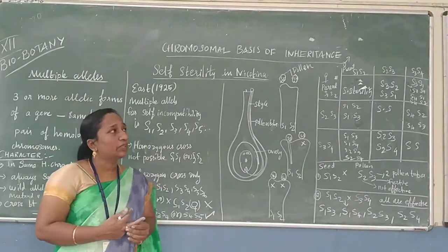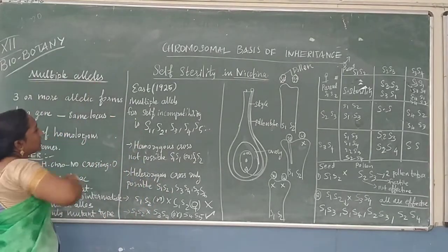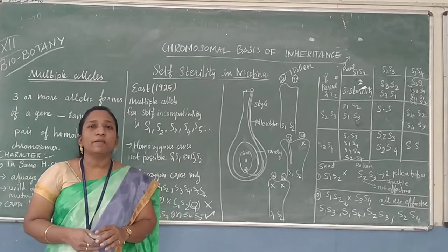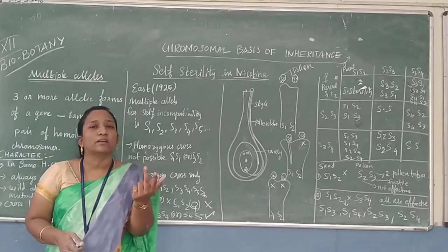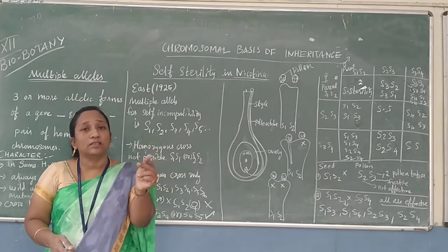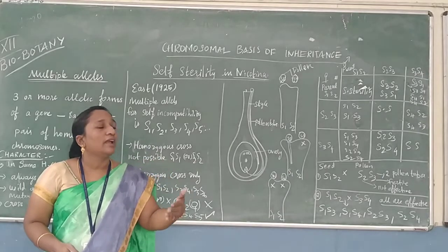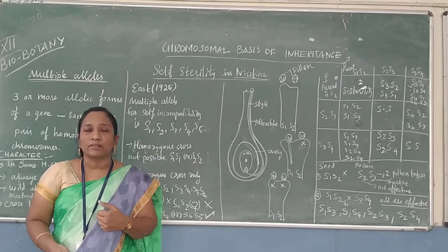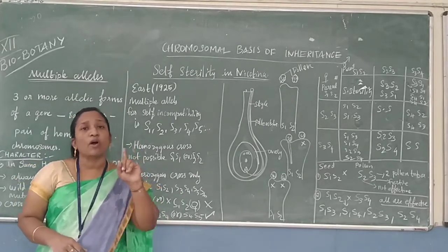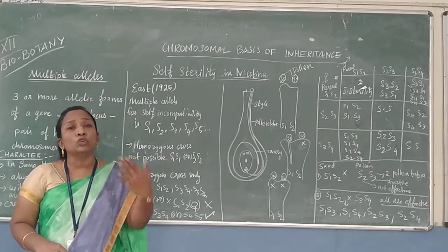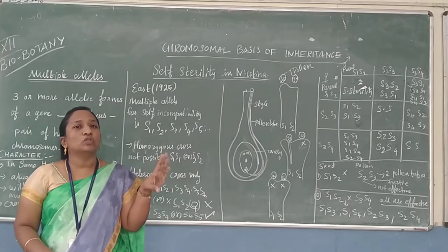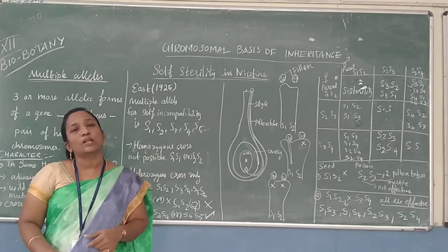Today we are going to learn about multiple alleles. Do you know what is meant by multiple alleles? We know that two alleles on homologous chromosomes are present. But here, instead of two alleles, more than two or three alleles are involved in maintaining a characteristic feature — that is called multiple alleles.